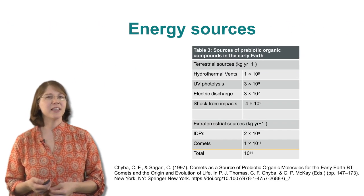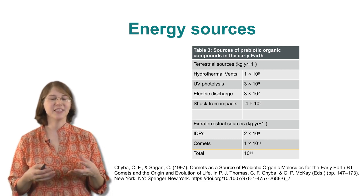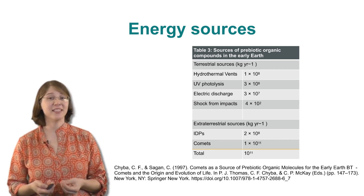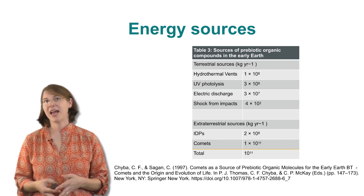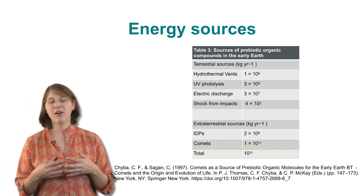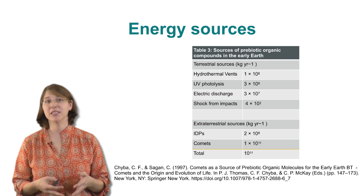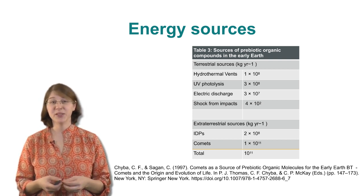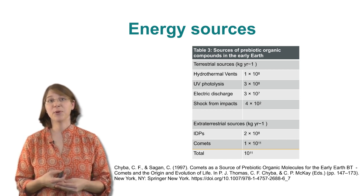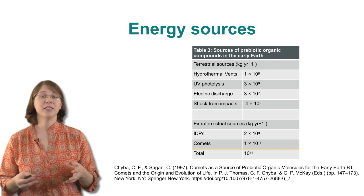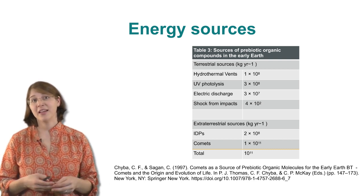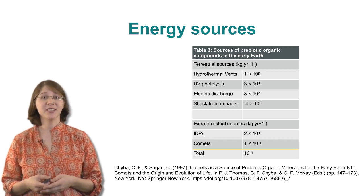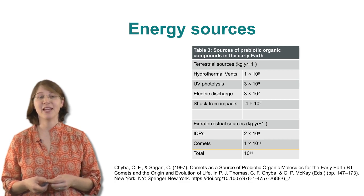So was there really enough of these reactions to generate a complex chemical library that could have led to life? When we estimate how often these occurred and compile all the different sources of carbon, we estimate that about 100 billion kilograms per year of prebiotic organic material was delivered or synthesized on Earth during this time. We think there was definitely enough material to actually jump-start life and to have abiogenesis occur.